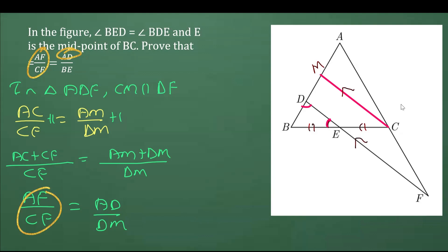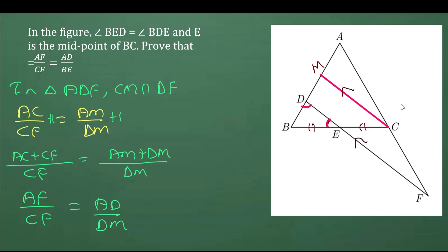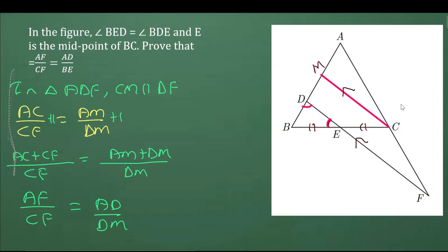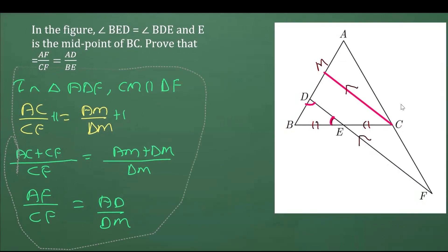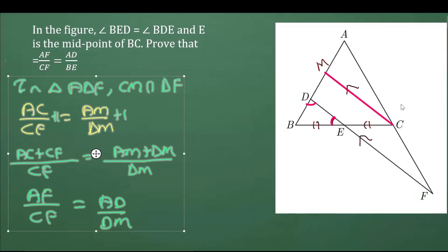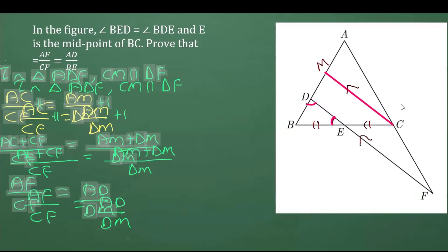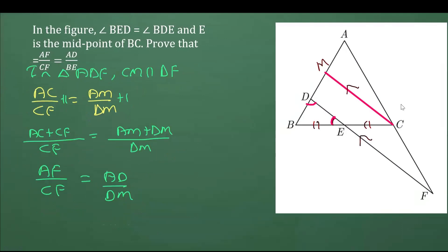We need AF over CF, which we got, and AD, which we have, but we need BE — however we got DM. So we need to make changes here by applying BPT again, and also by using the isosceles triangle property.